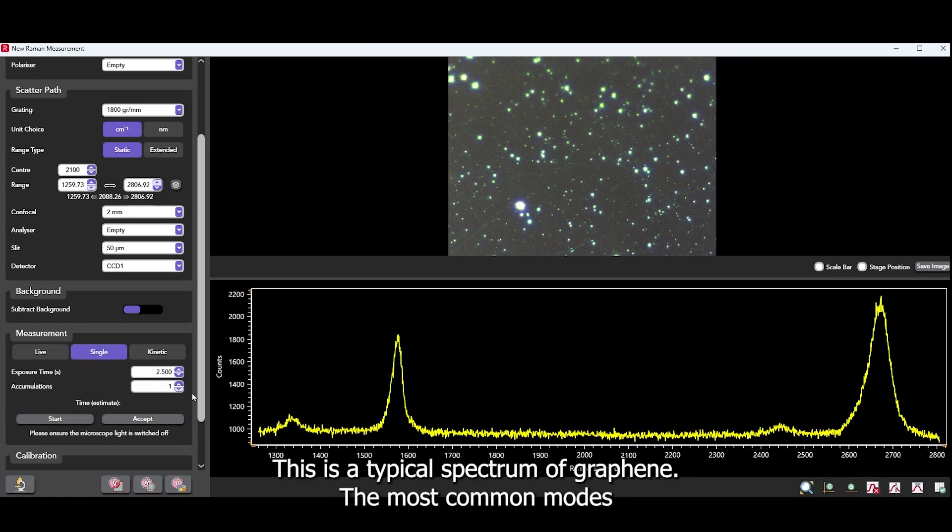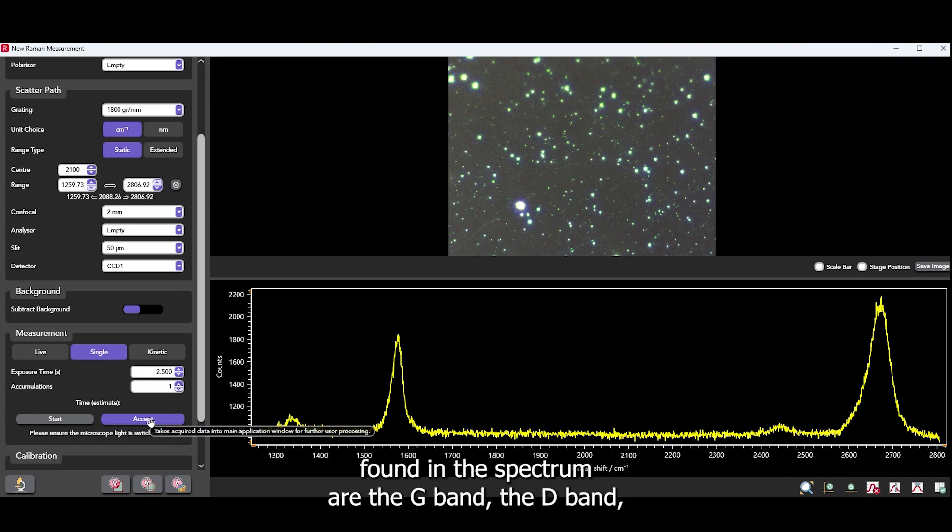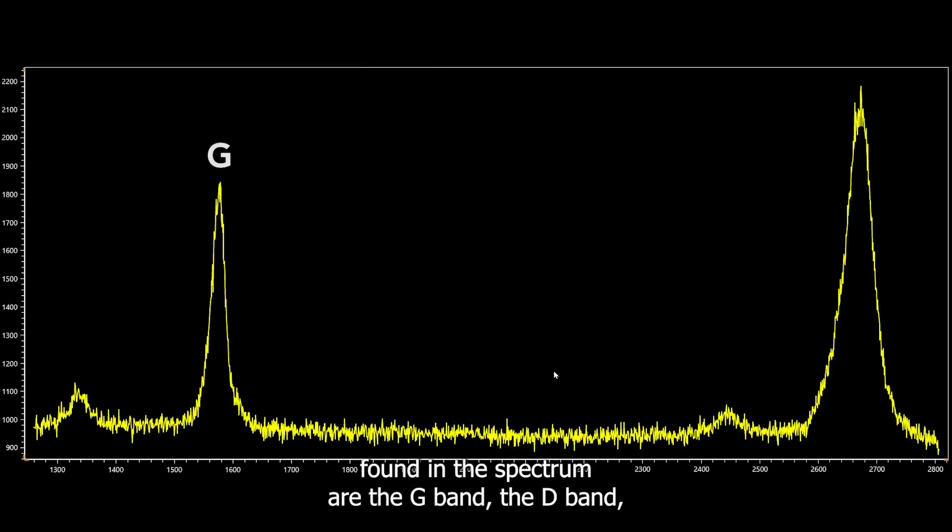This is a typical spectrum of graphene. The most common modes found in the spectrum are the G band, the D band and the 2D band.